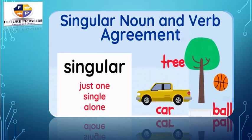First, we have something that we call singular noun and verb agreement. Singular means that it's only just one thing — one person, one object, one place, one animal. It's only one thing. Like car — it's one car, so it's singular. One tree, one ball — this is what singular means.